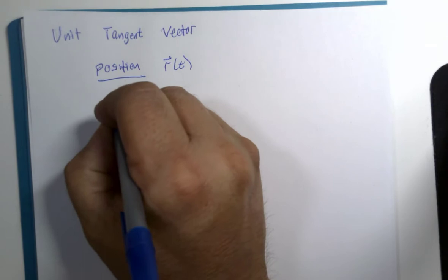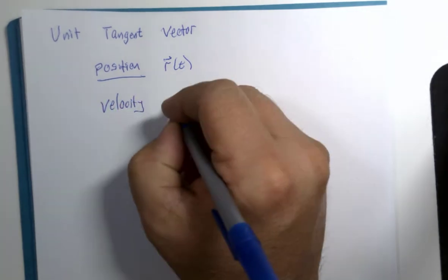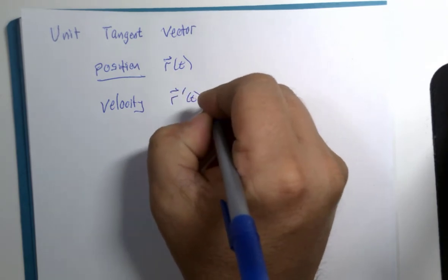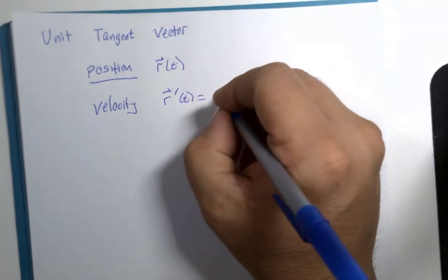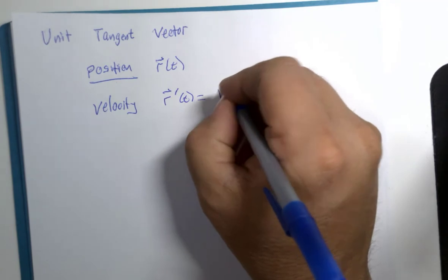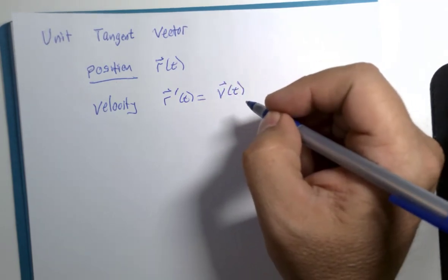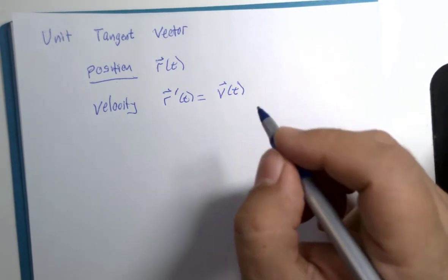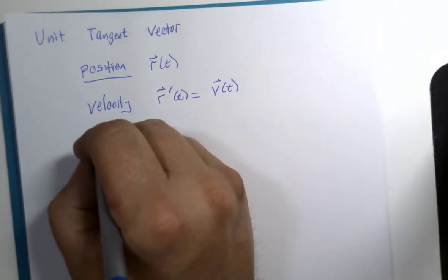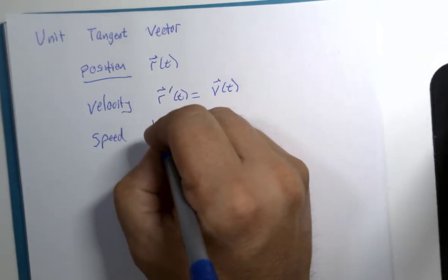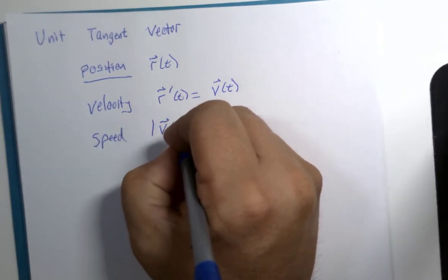And we have our velocity vector, which is the first derivative of position, V of T. And we also have what is called speed. Speed is the magnitude of the velocity vector.